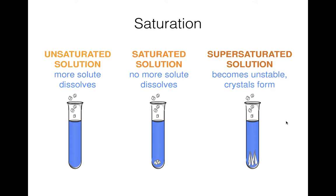You have to be clever to make a supersaturated solution — you play around with temperature. One way is to heat up the solution, which allows more to dissolve. Then you slowly cool it back down to room temperature, and the dissolved solute stays in the solution as long as you don't agitate it. If you agitate it, all of the solute will crystallize and precipitate out, so it's considered unstable. Anything could make it crystallize — shaking it, a bubble forming, or dropping in a seed crystal, and it will instantly solidify.